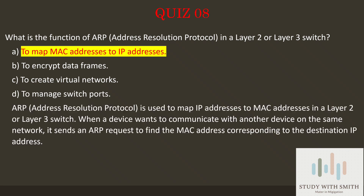The answer is A — to map MAC addresses to IP addresses. ARP, Address Resolution Protocol, is used to map IP addresses to MAC addresses in a Layer 2 or Layer 3 switch. When a device wants to communicate with another device on the same network, it sends an ARP request to find the MAC address corresponding to the destination IP address.